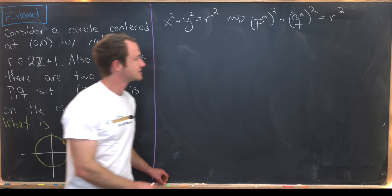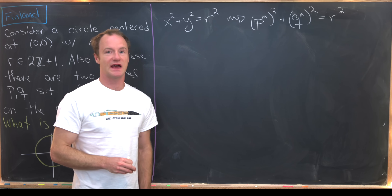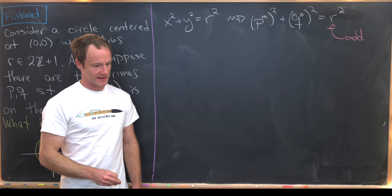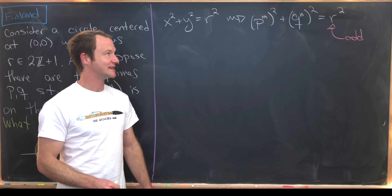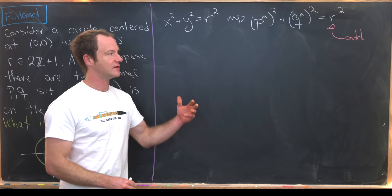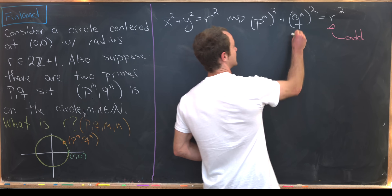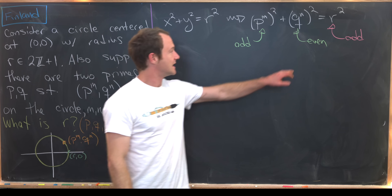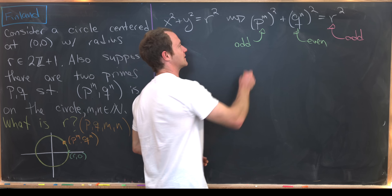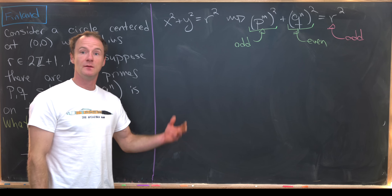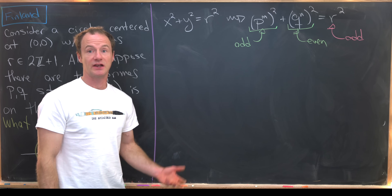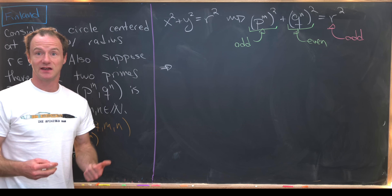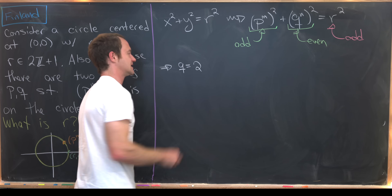Now let's see what that equation tells us. We have an odd number r² on the right-hand side, and a sum of two terms on the left-hand side. For a sum to be odd, those two terms must have opposite parity — one even and one odd. Without loss of generality, assume p^(2m) is even and q^(2n) is odd. If q^(2n) is even and q is prime, then q must be the only even prime, which is 2. So q = 2.